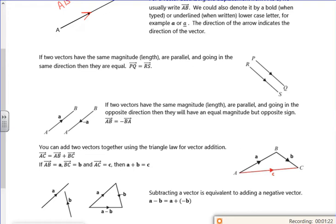So it says if two vectors have the same magnitude of length, then they're going in the same direction. So they're equal to each other. So that would tell us that they're parallel to each other. Parallel.